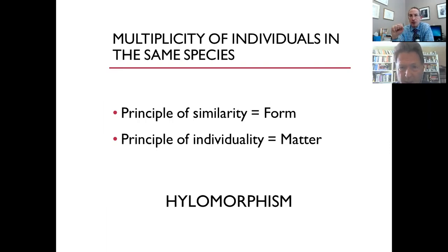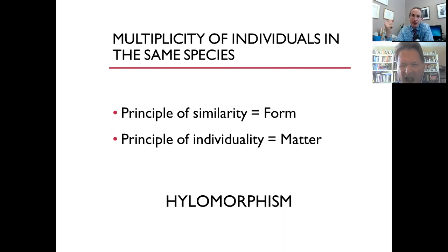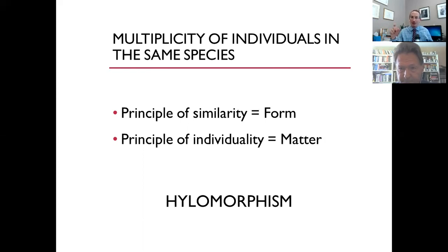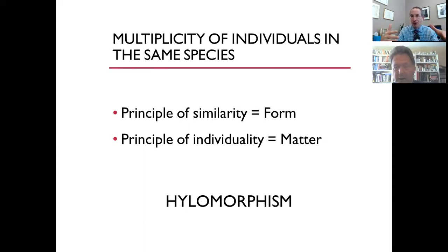When it comes to the multiplicity of individuals in the same species, we invoked that there must be a principle of similarity between the different individuals, and that's the form that's common to all the individuals in the species. But there must be something that individualizes each member of the species, and that's what we call matter. The two terms fundamental to the philosophy of nature — form and matter, or in Greek hyle and morphe — give us the word hylomorphism.